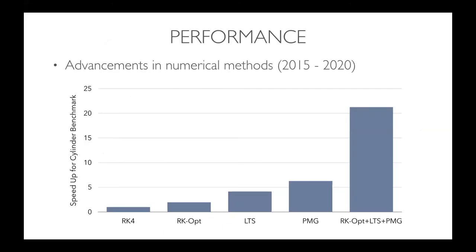The important point is that these acceleration technologies can all be used together. Starting with RK4 as the baseline, switching to optimal Runge-Kutta methods gives a speedup factor of around two. Adding locally adaptive pseudo-time stepping gives another factor of around three or four. Then adding polynomial multigrid gives a factor of around six or seven. By combining all these technologies together — as shown in Nikki's more recent papers — you can get speedup factors in excess of 20.